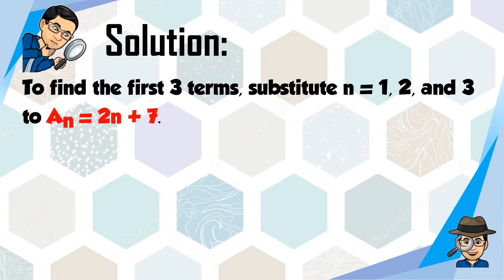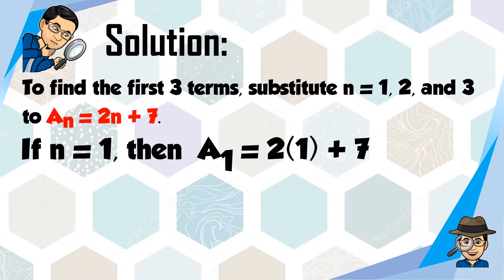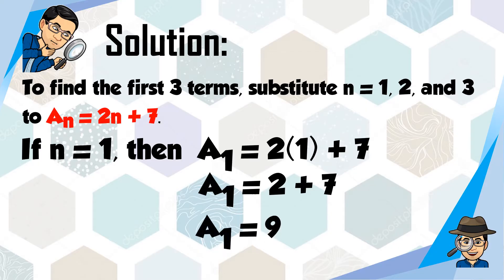Why do we substitute 1, 2, and 3? Because the first three natural numbers are 1, 2, and 3. So let's start with n equals 1. If n is equal to 1, then a sub 1 is equal to 2 times 1 plus 7. The product of 2 and 1 is 2, and 2 plus 7 is equal to 9. Therefore, the first term is 9.